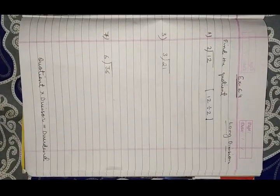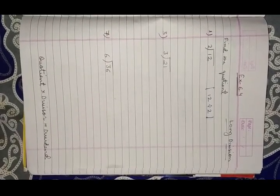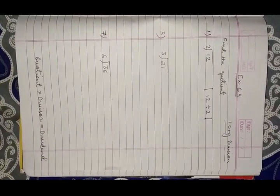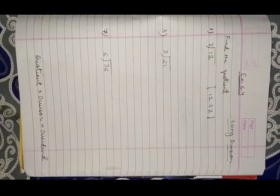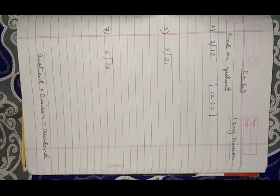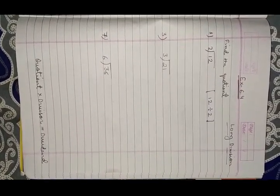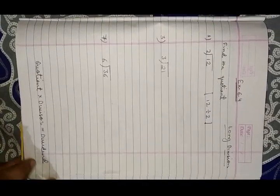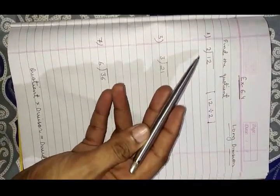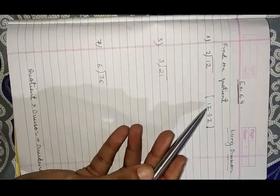Hello students. In the last class we completed the division by repeated subtraction method. Today we will start with long division, Exercise 6.4. Find the quotient: 12 divided by 2.